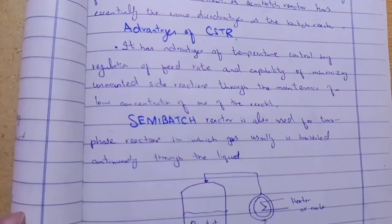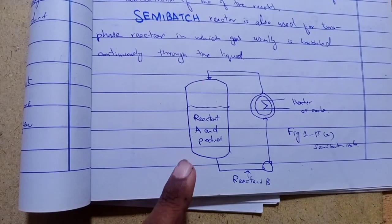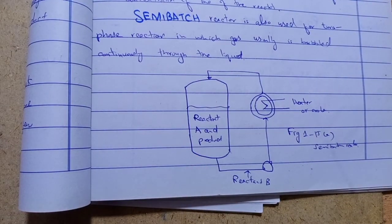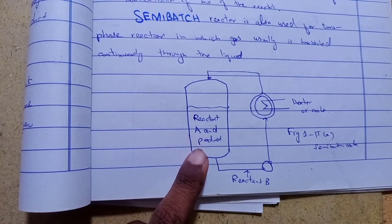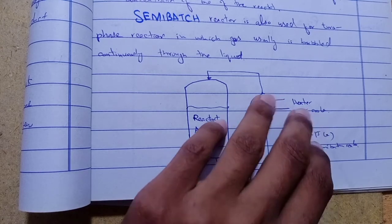The semi-batch reactor is also used for two-phase reactions in which gas is usually bubbled continuously through the liquid. In this figure, you can easily see reactant A and product B in this reactor, with the reactor fitted with a heat exchanger or cooler. The semi-batch reactor is used for two-phase gas-liquid reactions.